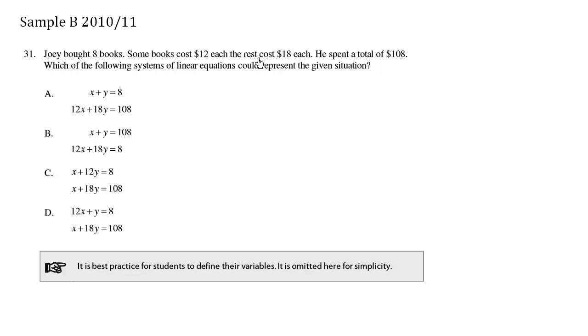Joey bought eight books. Some books cost $12 each. The rest cost $18 each. He spent a total of $108. Which of the following systems of linear equations could represent the given situation?